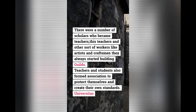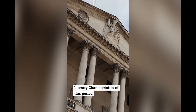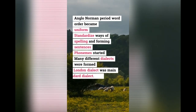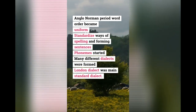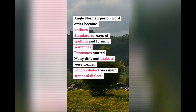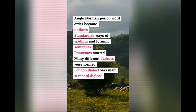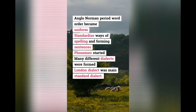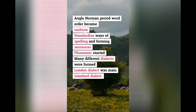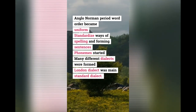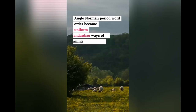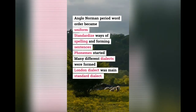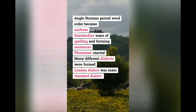Now let's look at the literary characteristics of this period. First, in the Middle English or Anglo-Norman period, word order became very uniform — the uniformity of words. Second, standardized ways of spelling and forming sentences developed. Third, the use of phonemes began. There were also many different dialects of English spoken all over England, and London became the standardized dialect — the main standard dialect of this time.